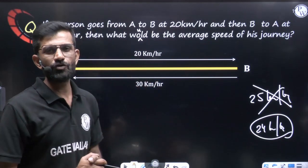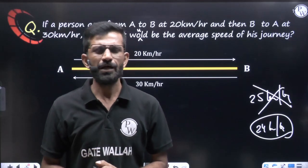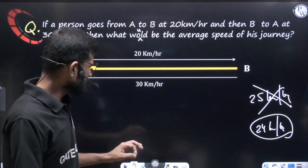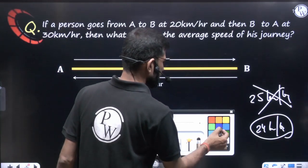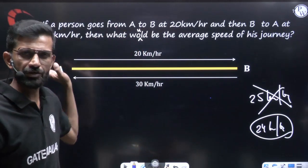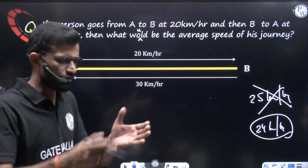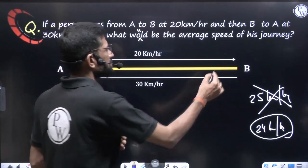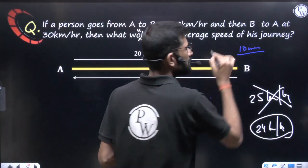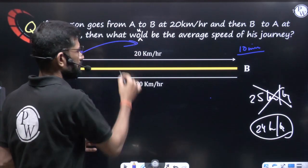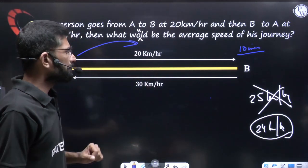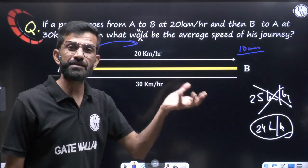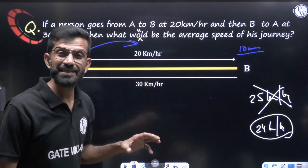Let's understand why the answer is 24 and not 25. The distance between A and B is unknown. Going at 20 km/hr, the person takes some time — say roughly 10 minutes. Coming back at 30 km/hr, since speed is higher, he takes less time — say roughly 7 minutes. Total journey time is 17 minutes for a complete round trip.